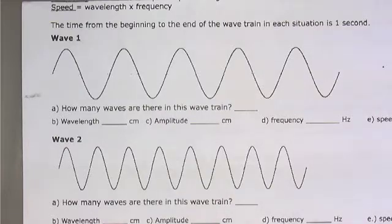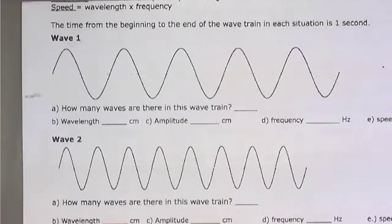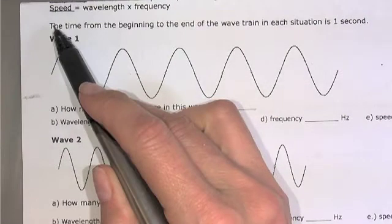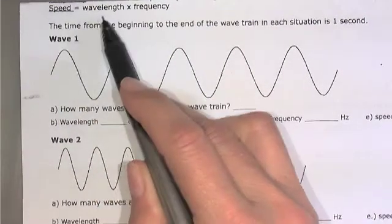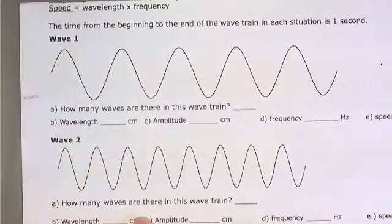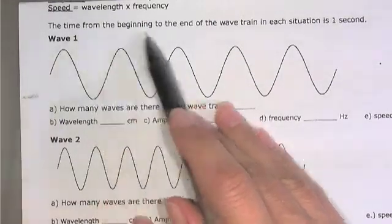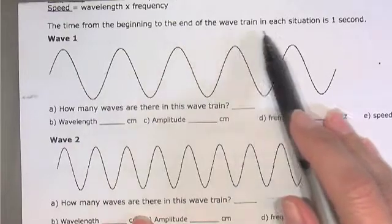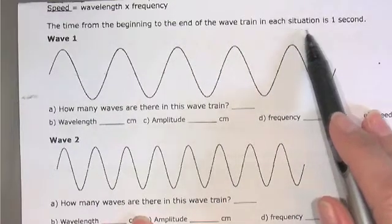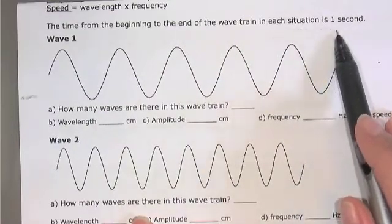This video is on how to do the wave worksheet. Two things to notice: right here we have the equation for wave speed, which is wavelength times frequency. The other important thing is this line here — the time from the beginning to the end of the wave train in each situation is 1 second.